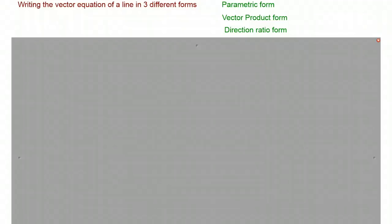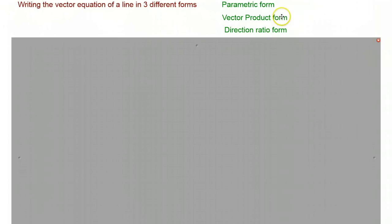Hi, we are going to look at writing the vector equation of a line in three different forms. We are going to have a look at writing it in parametric form, which you will have seen in Core 4. We are also going to have a look at writing it in vector product form, and then we are going to use this to finally get it into direction ratio form.